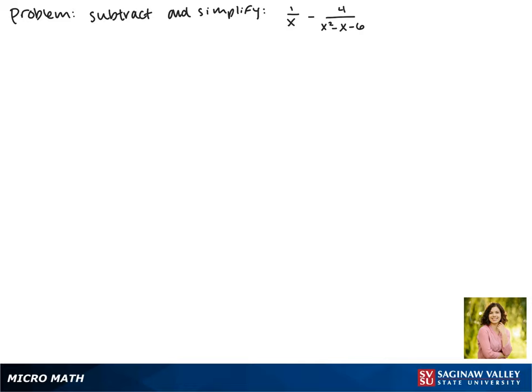Today we'll be subtracting and simplifying the expression 1 over x minus 4 over x squared minus x minus 6. Our first step is to factor our denominators. The first term has a denominator of x that can't be factored so that's going to stay the same.